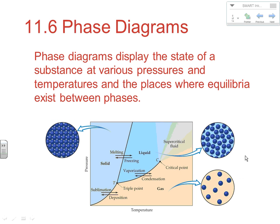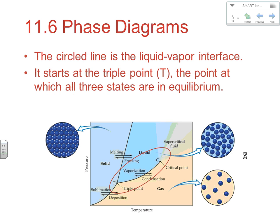The last section gets into phase diagrams. A phase diagram is a graph showing the state of a substance at various temperatures and pressures, and where the different changes in state occur. You can see where you have solids, liquids, and gases at different temperatures and pressures, and you can see all the melting points, boiling points, sublimation points, and so on. It's a diagram that really shows the relationship between state and the temperature and pressure of that substance.